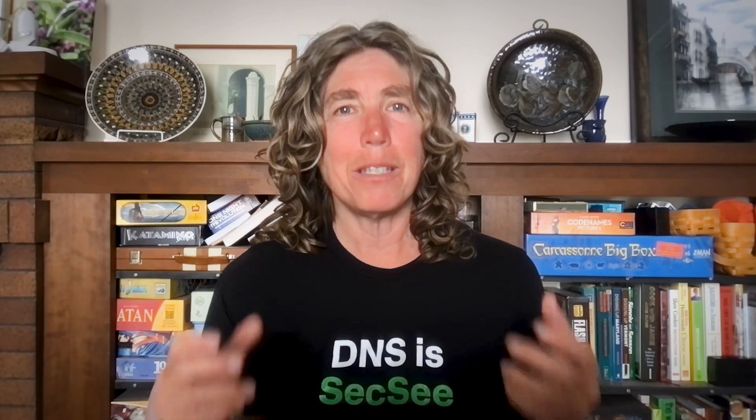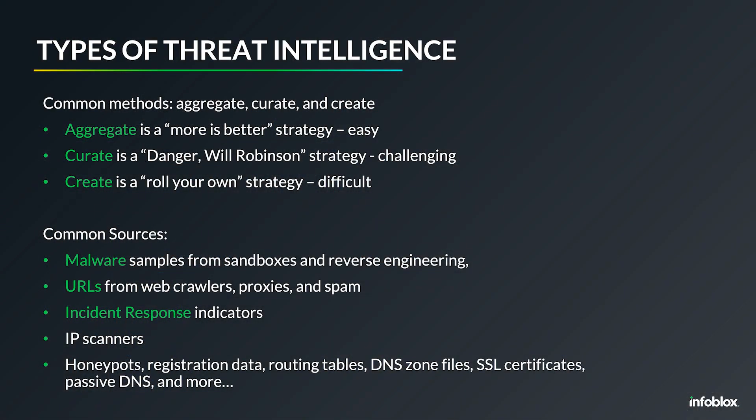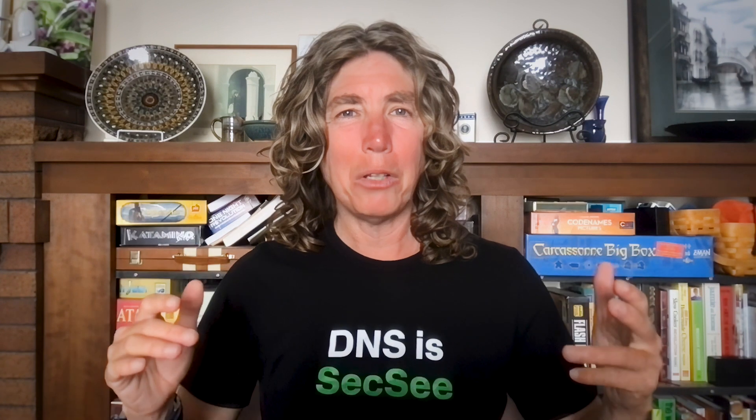Typically phishing URLs will be put into DNS block lists and used in security products. We also see incident response indicators being used — IP addresses that attacked the network or the domains that were reached out to after a compromise. Another source is IP scanners, and there are also honeypots, registration data, routing tables, and DNS queries. The primary ones you see in the market are going to be generated from malware, URLs, or some kind of DNS-based data with registration or DNS queries.